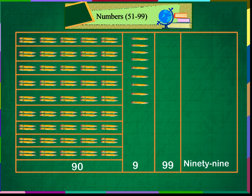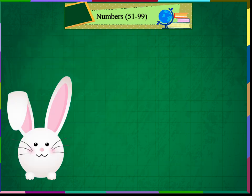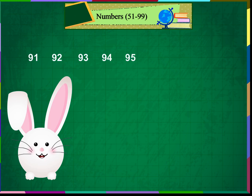90 and 9 makes 99. 91, 92, 93, 94, 95, 96, 97, 98, 99.